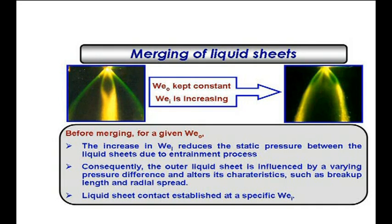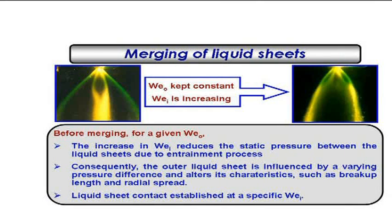This is the phenomenon I was referring to. The data is plotted in terms of Weber number. This is the outer spray, and you keep on increasing the Weber number — just by increasing the velocity of the internal jet. It starts with a tulip-bulb type of shape and then expands. As you keep increasing the inner flow, there is a suction effect — an entrainment — and the outer jet comes closer. The outer jet at some point has an 'eye' where the two come and mix, and there is an internal circulation that sets in.